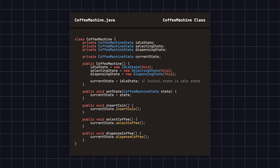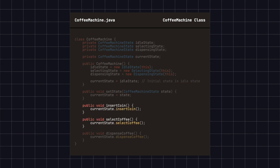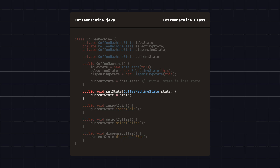Next, we define the coffee machine class, which manages the different states of the coffee machine and executes the appropriate actions based on the current state. The coffee machine class maintains different state objects internally and tracks the current state through the current state variable. Each time the insert coin, select coffee, or dispense coffee methods are called, the system performs the corresponding action based on the current state and switches to the next state if needed. The state transitions are handled by the set state method.